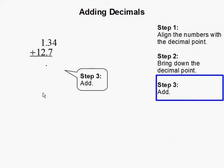And finally, Step 3: Add. Now for this empty space right here, you can put a zero. And after that, you would simply add as you normally would any other number.